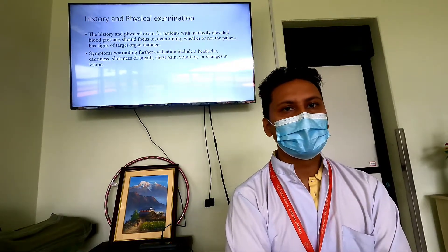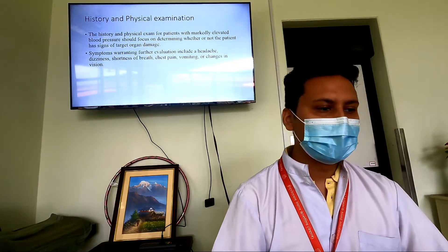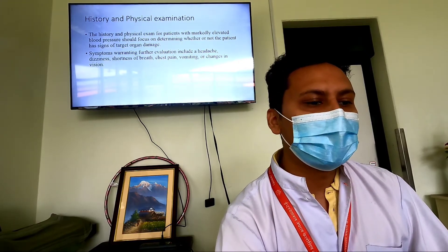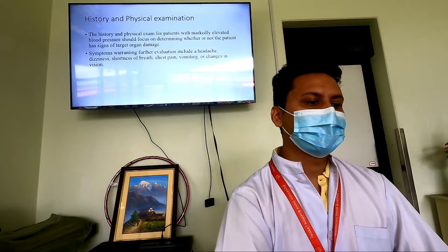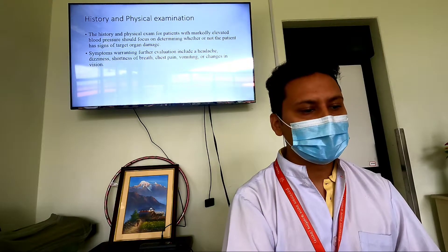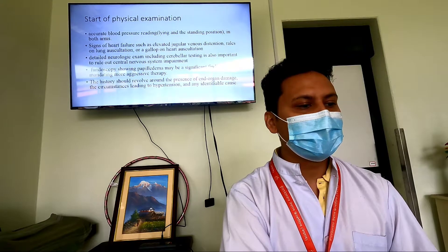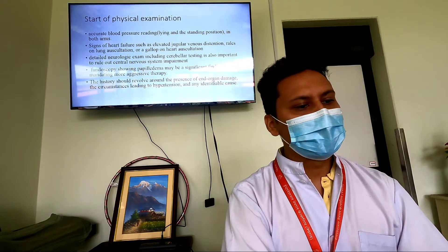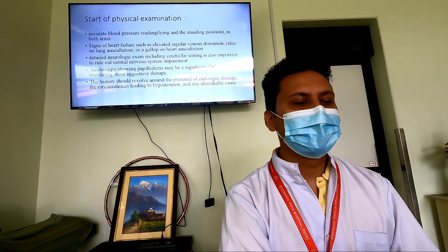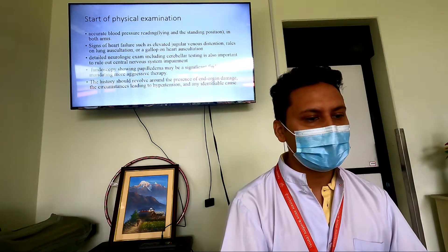When a patient presents with elevated blood pressure or hypertensive crisis, history and physical examination should be focused on signs of target organ damage. This could include severe headache, dizziness, shortness of breath, chest pain, vomiting, or change in vision. Physical examination begins with accurately measuring blood pressure in both lying and standing positions and in bilateral arms. We should also look for impending signs of heart failure such as elevated jugular venous distension, rales on lung auscultation, or gallop on heart auscultation.